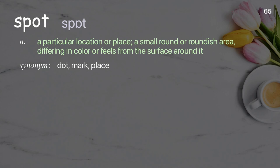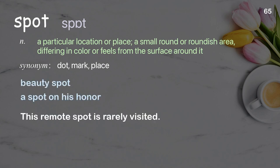Spot: a particular location or place; a small round or roundish area differing in color or feel from the surface around it. Examples: beauty spot, a spot on his honor. This remote spot is rarely visited.